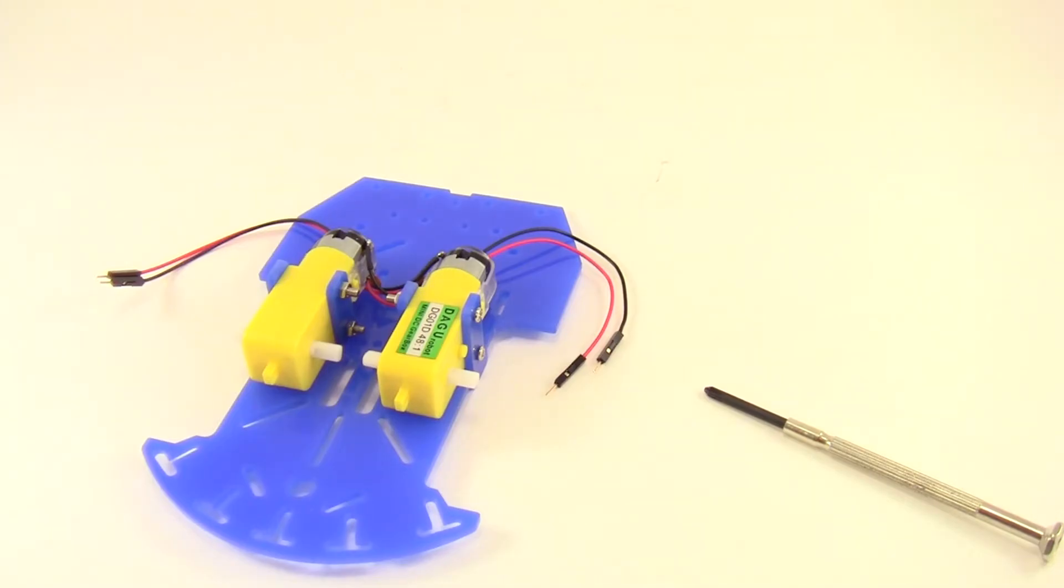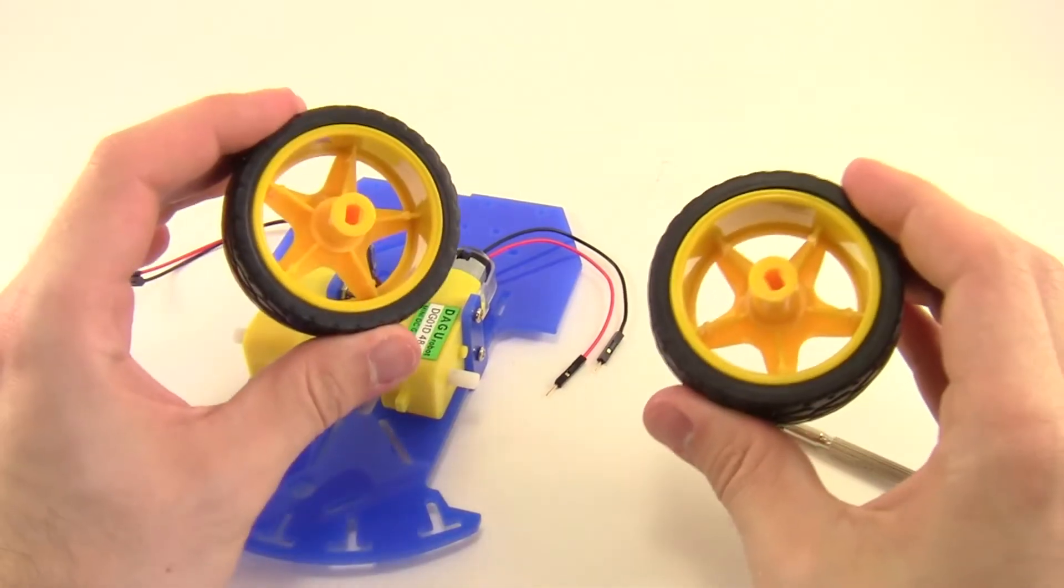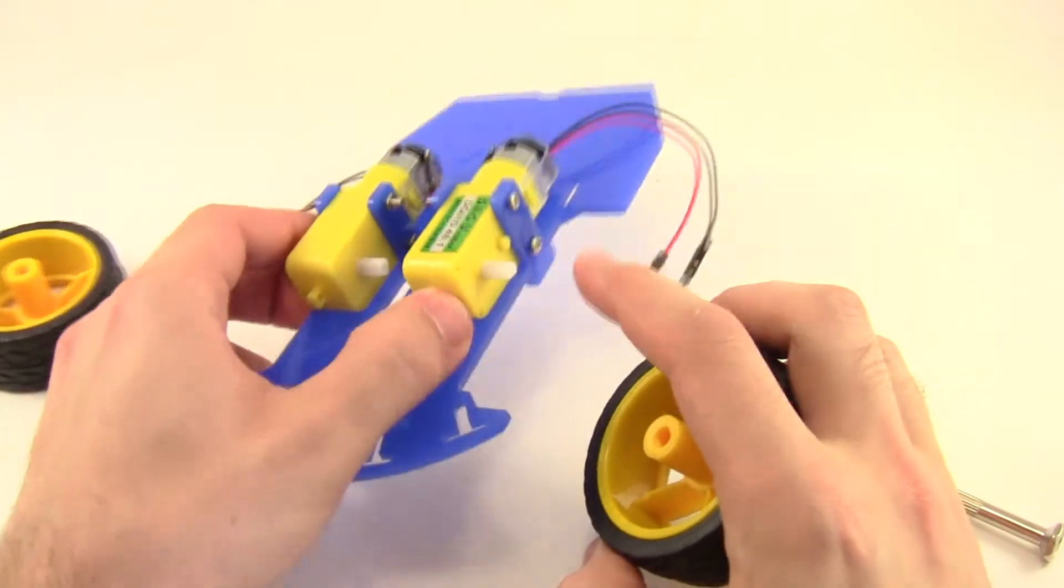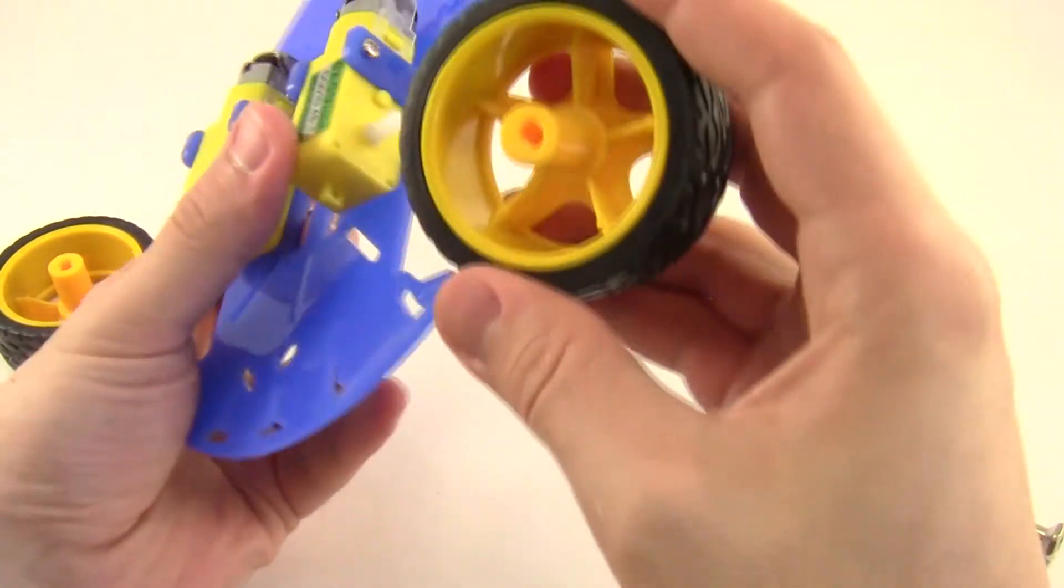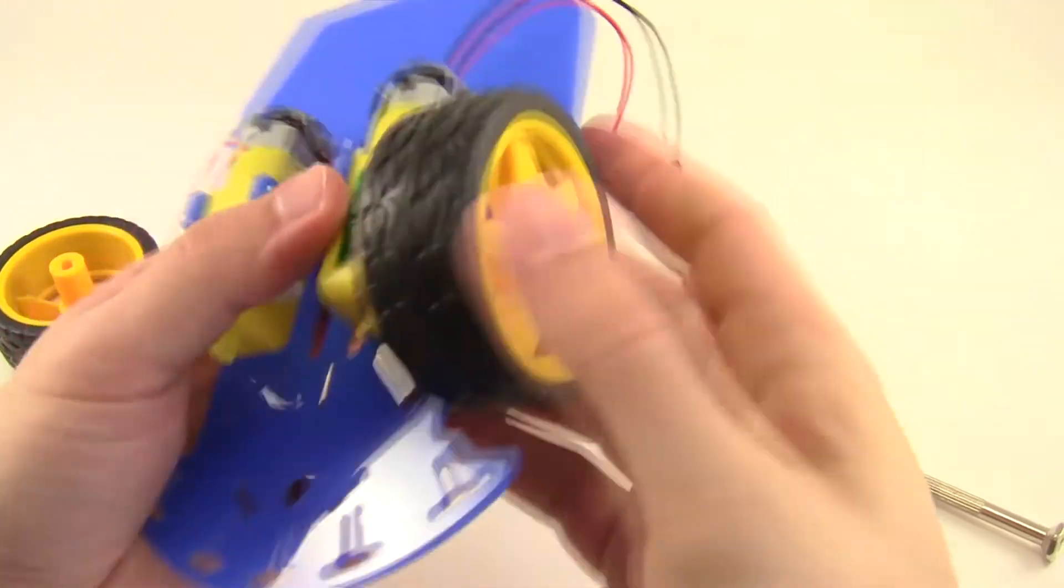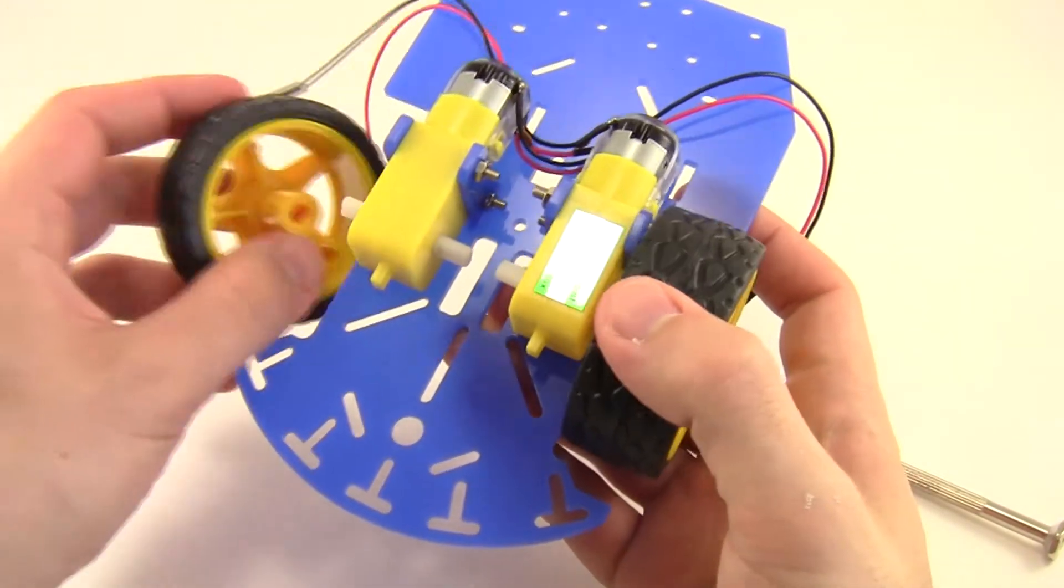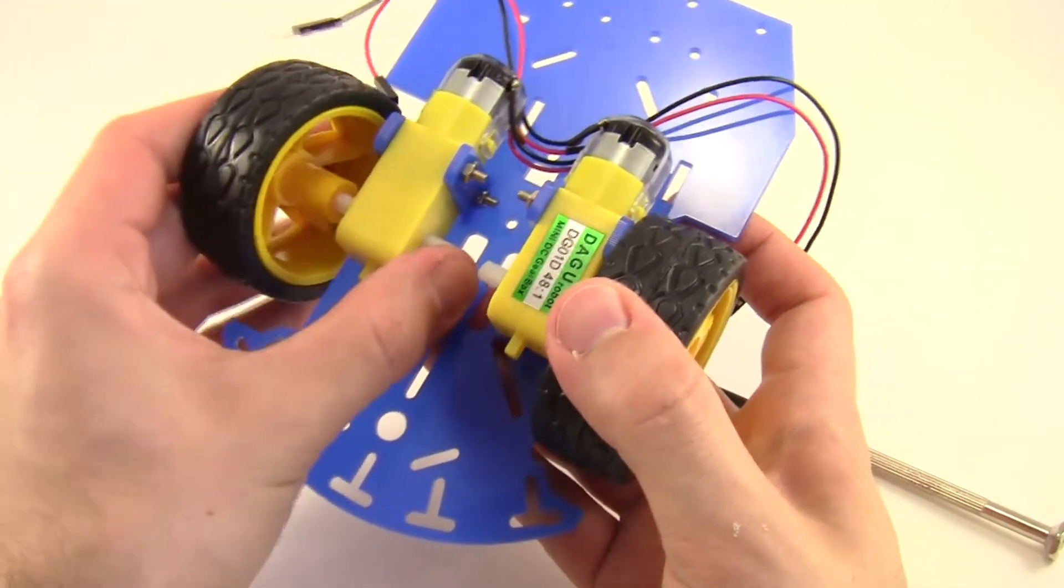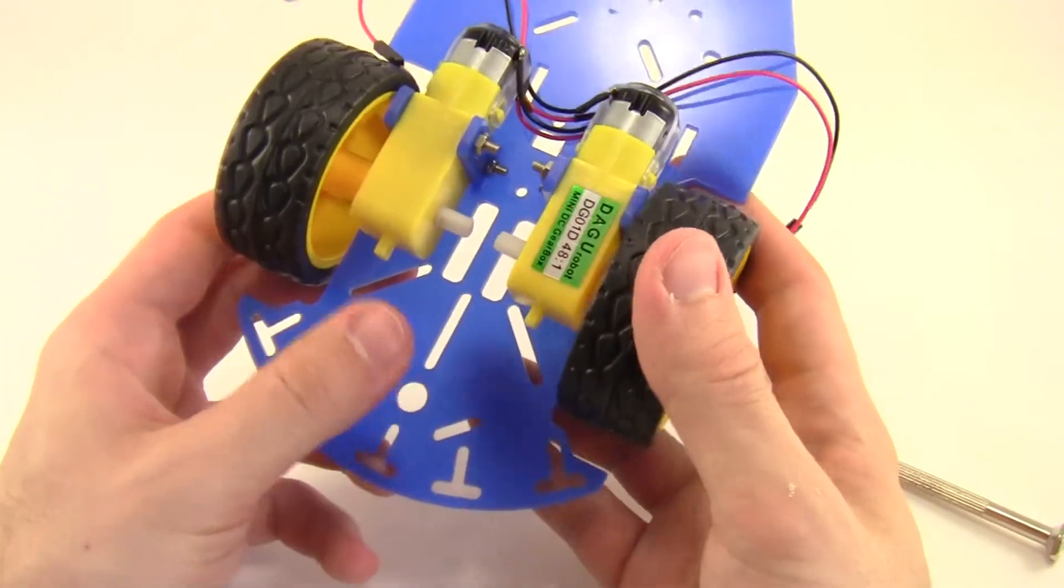So the next step is to attach the two wheels to the robot, and this part is much easier, there's no screws or nuts involved, they just slide directly onto the white plastic shafts that are sticking out of the motor. So all you have to do is line those up and press them firmly on, and then friction just holds them in place, there's no need to tighten any screws.